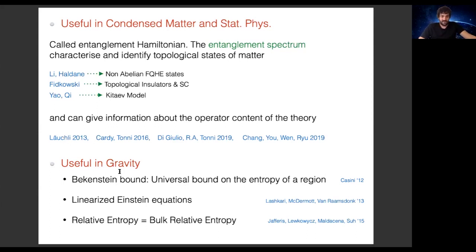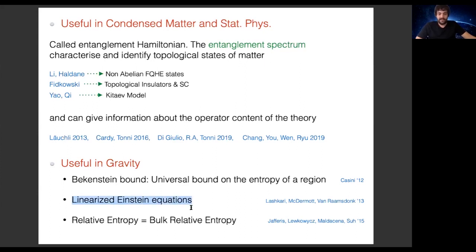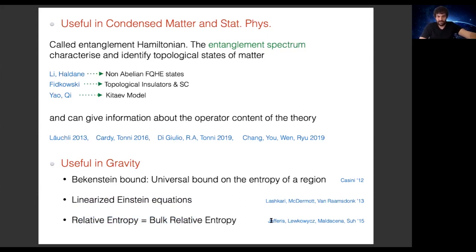The modular Hamiltonian is also useful in gravity. Using the relative entropy and the modular Hamiltonian, there was a claim of a better definition of the Bekenstein bound — a universal bound on the entropy of a region. Also, from the first law of entanglement you can obtain the Einstein equations, which is remarkable: studying quantum information quantities, you can derive the Einstein equations. The modular Hamiltonian is also central to the relative entropy formula of JLMS.